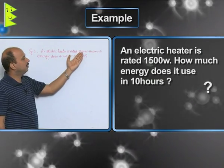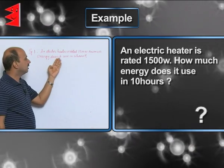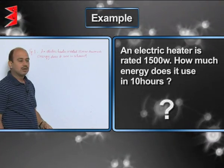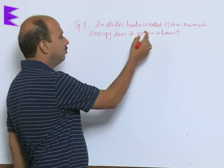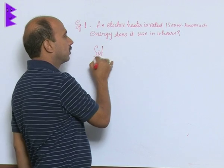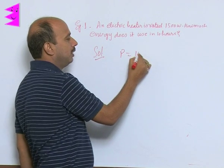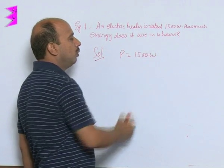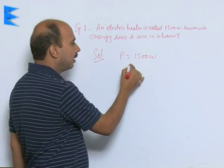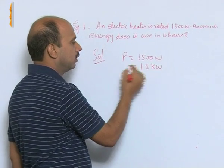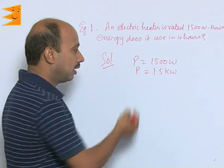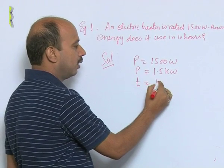An electric heater is rated 1500 watt. How much energy does it use in 10 hours? The power is given to you, 1500 watt. We can convert into kilowatt, so we can take here 1.5 kilowatt. This is the power. Time we are given 10 hours.